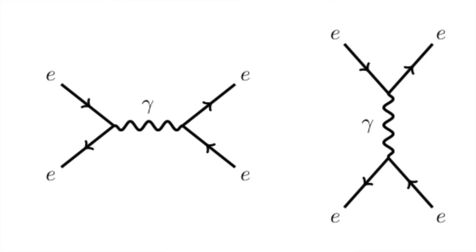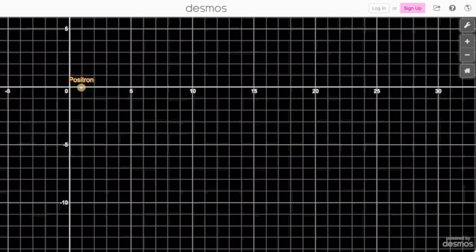Looking at two Feynman diagrams — one for two electrons repelling each other and one for electron-positron annihilation — you can see that they are both the same interaction, just rotated with respect to space and time. While the one electron universe didn't pan out, it was incredibly useful to advancing physics. Thinking of antimatter as time-reversed matter is useful for thinking about and calculating quantum interactions. It just goes to show that out-of-the-box thinking is always useful in science. While not every idea will stick, some will result in great strides forward.